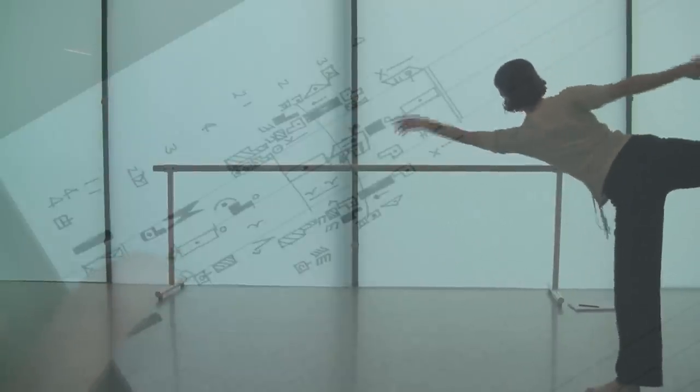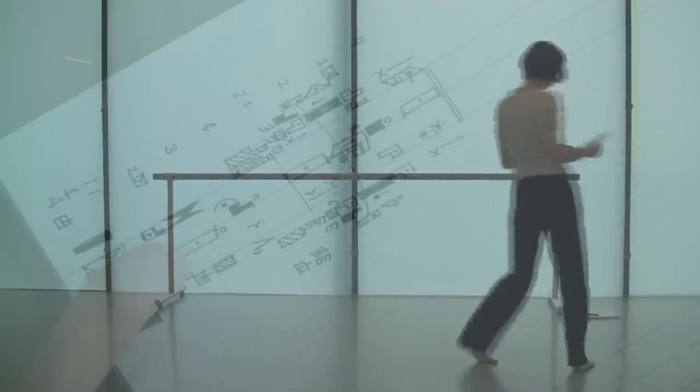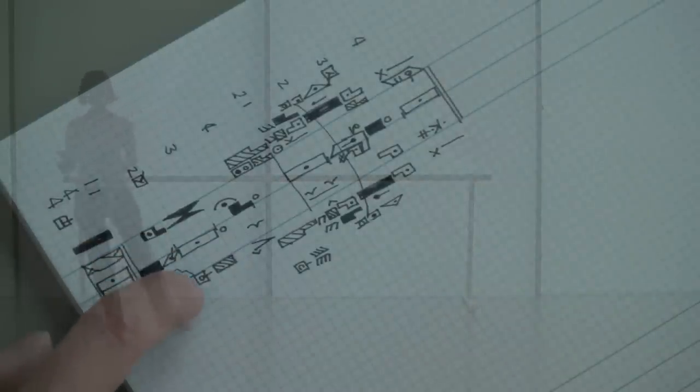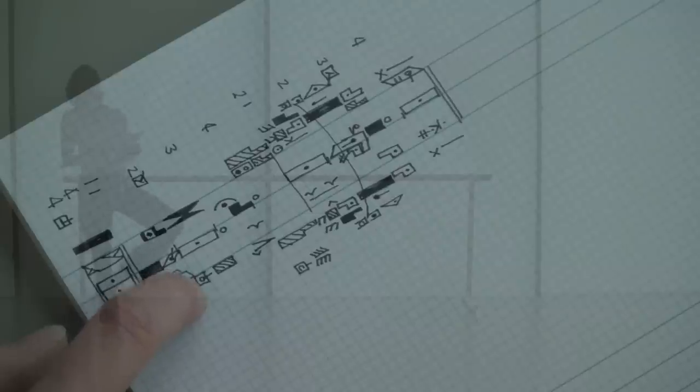In the next count, I'm going to lengthen the supporting leg, which is the right leg, when I bring the left leg into a coup de pied or a bent position with my left foot near my right ankle. And the front of my chest is going to lift up towards the ceiling.